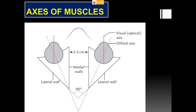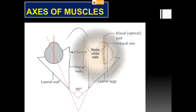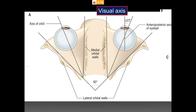Considering the axes of the muscles: the orbits project anterolaterally, so when looking forward the eyes form an axis called the visual axis or optical axis. If the eyeballs are placed exactly within the orbits, the eyes would look anterolaterally — that axis is called the orbital axis. The angle between the orbital axis and the visual axis is approximately 23 degrees.